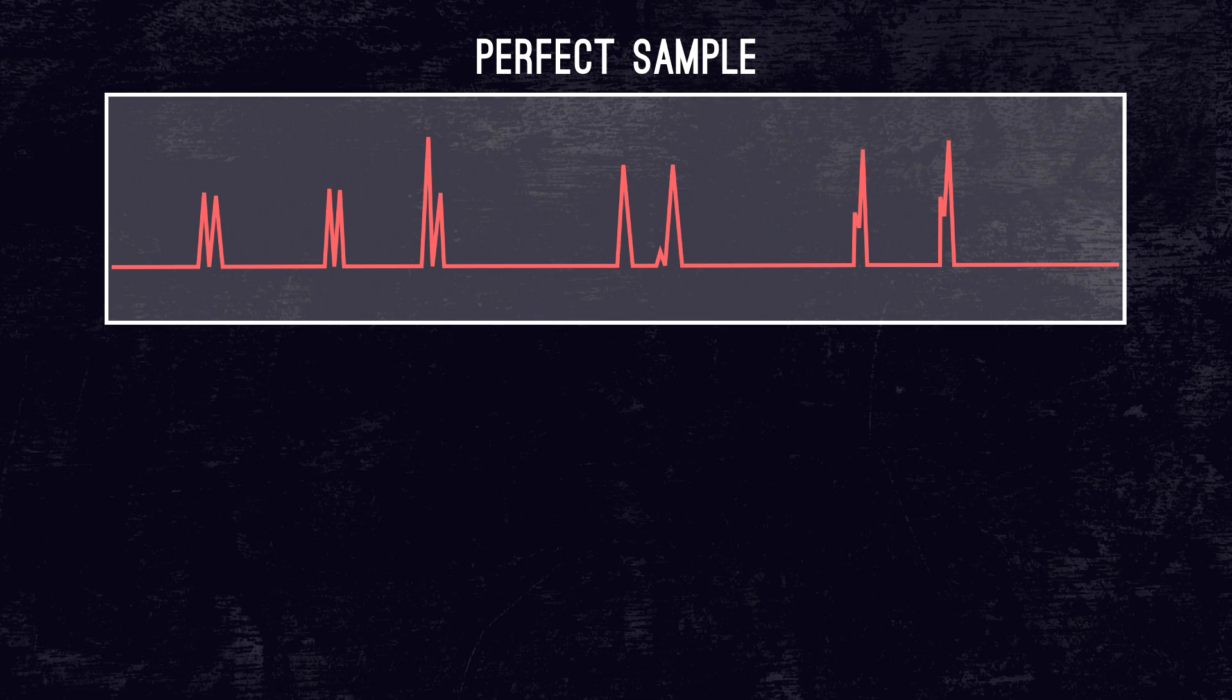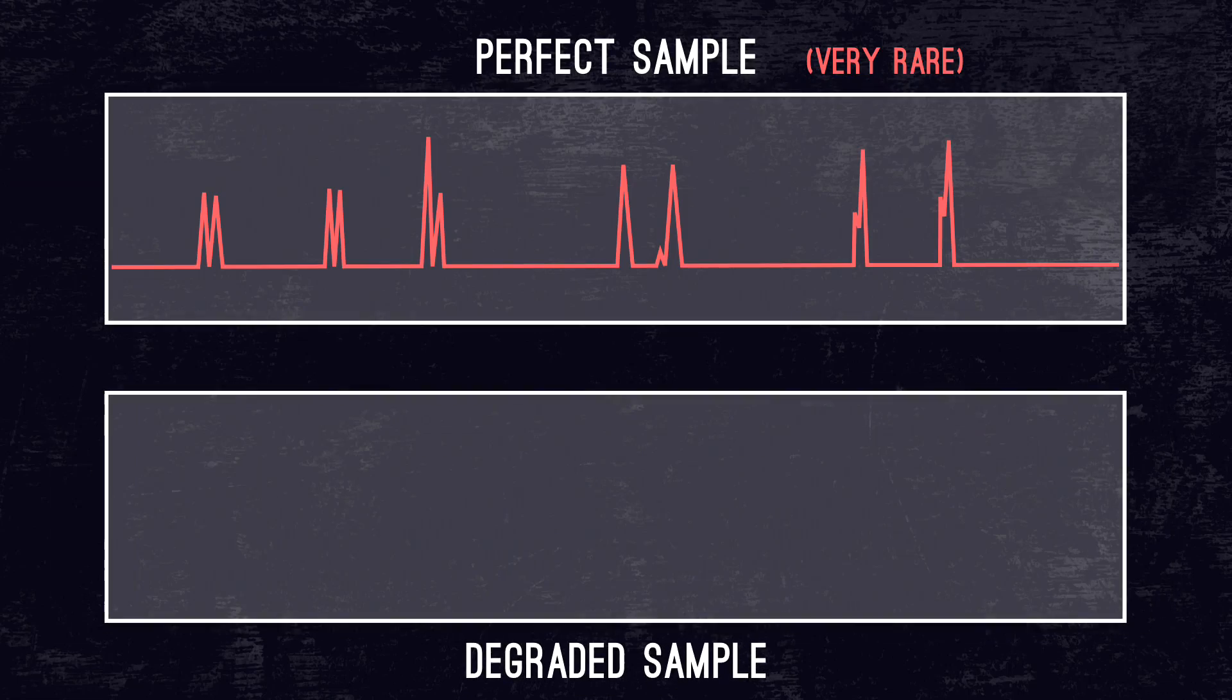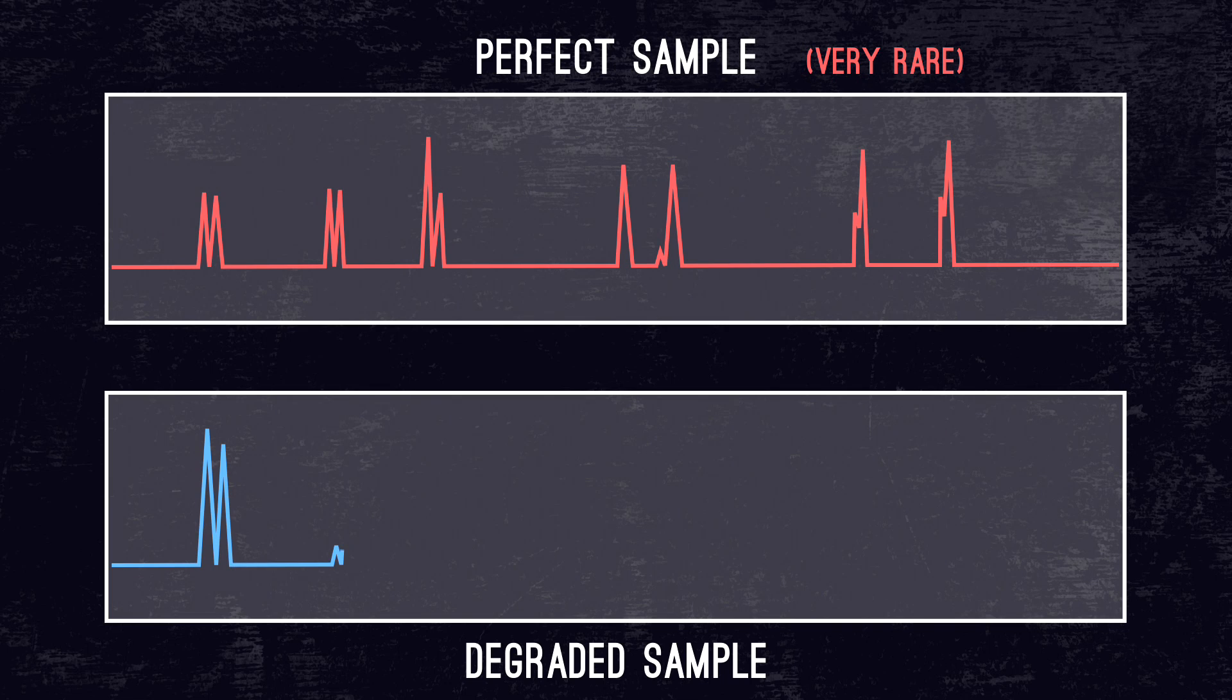But in criminal investigations, finding a perfect sample is actually not the norm. Sometimes analysts are working with degraded samples that are old or have been exposed to the elements. See how the spikes start to fade away?